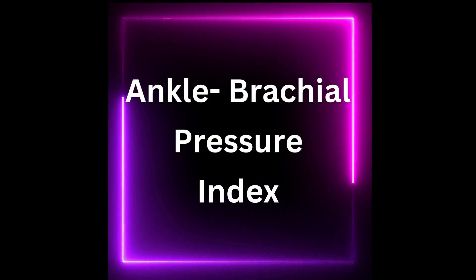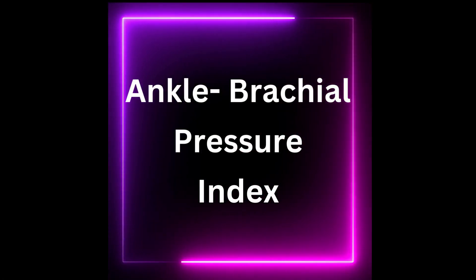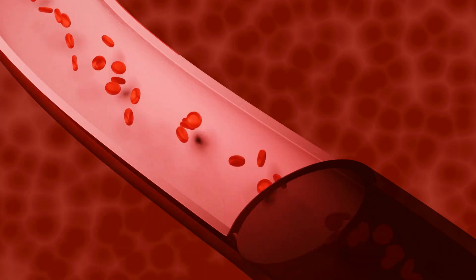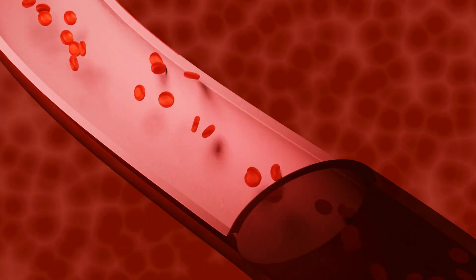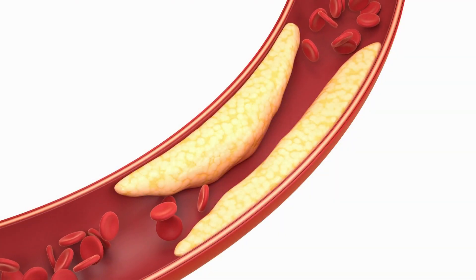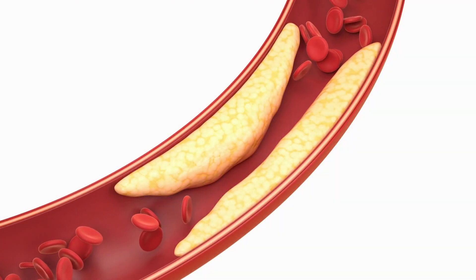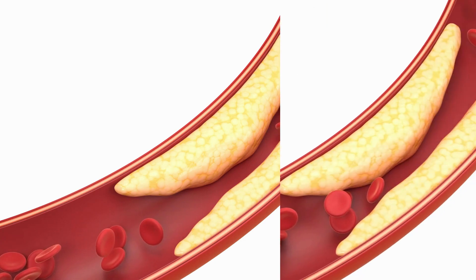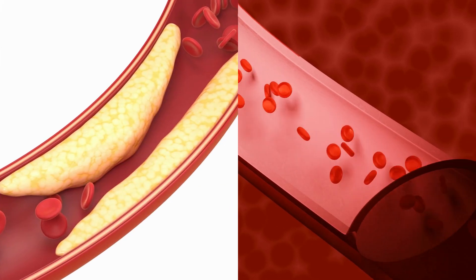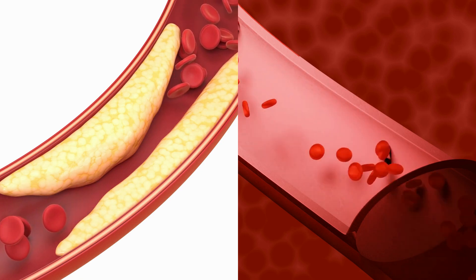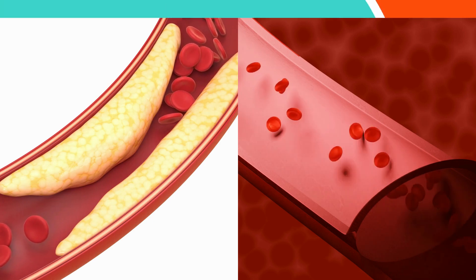To determine plaque buildup and arterial blockage, measuring the severity of peripheral artery disease in the legs is an effective method. This is done through the ankle brachial pressure index measurement, which compares the blood pressure in your ankle to your arm. Healthy blood vessels allow for easy blood flow, similar to a smooth pipe. However, in atherosclerosis, inflammation causes fats to attach to the artery wall, forming hardened plaques that narrow the vessel. Comparatively, blood flow in the affected vessel is restricted, while a healthy vessel allows unimpeded flow.